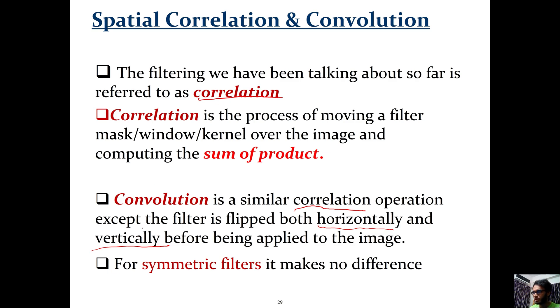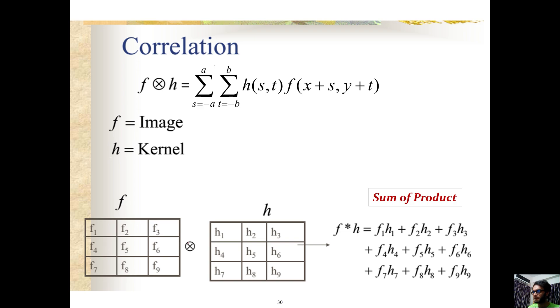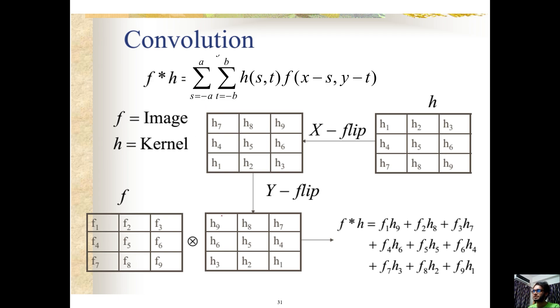For symmetric filters, when you rotate them on the X axis or Y axis or both, there's no difference because it's a symmetric filter. So for convolution versus correlation, there's no difference with symmetric filters. In correlation you directly compute, but in convolution you first flip the filter both horizontally and vertically, then compute.